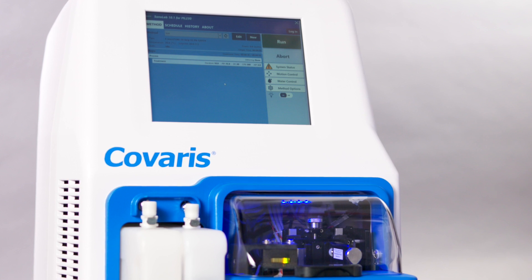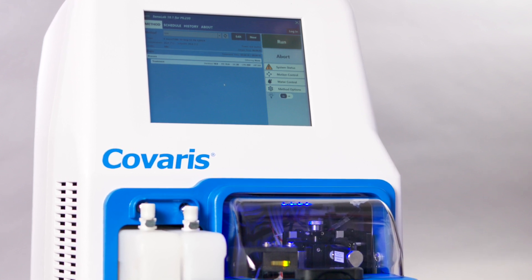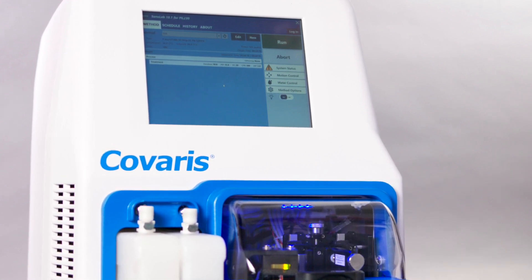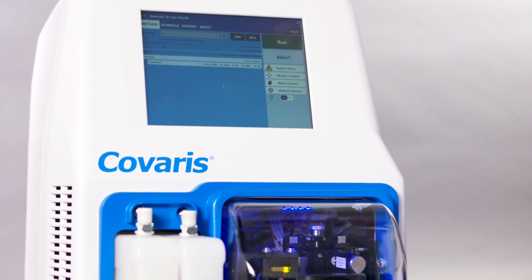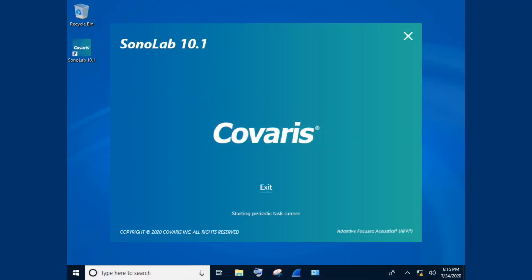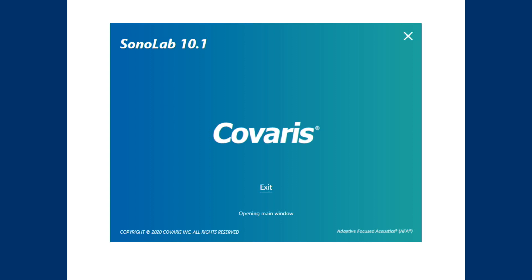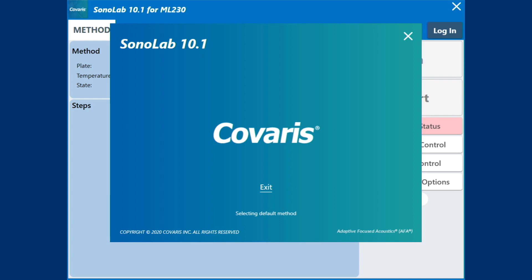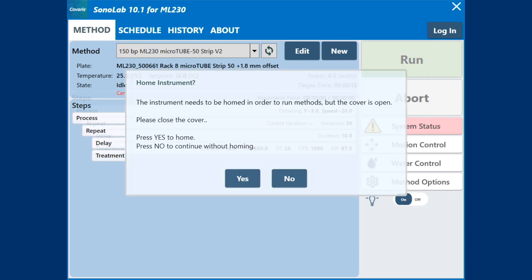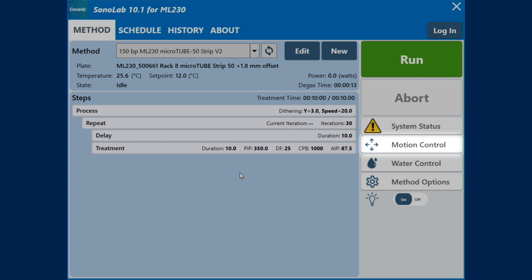To prepare for your first acoustic treatment run, the ML230 motion system must be initialized. The ML230 motion system normally initializes when Sonolab starts unless the user purposely skipped this step, in which case the motion system can be homed from the motion control pane.